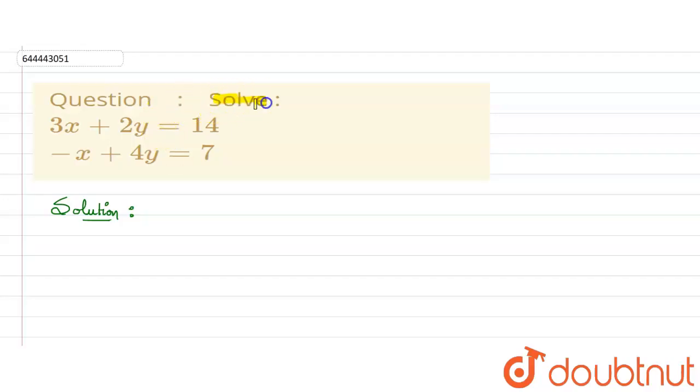Hello everyone. In this question we need to solve two equations: 3x plus 2y equals 14 and minus x plus 4y equals 7. Let's solve this.